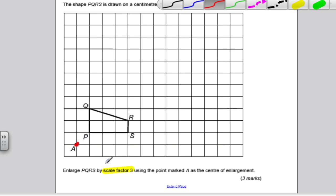I count squares from the centre to a corner and then multiply that by the scale factor and then get in my first corner. So P is 1 across and 1 up from the centre. So with a scale factor of 3, the new shape would be 3 across, 1, 2, 3, and 3 up, 1, 2, 3. That would be the new P, which I might call P dash.